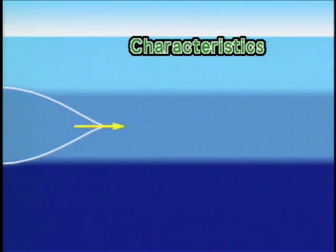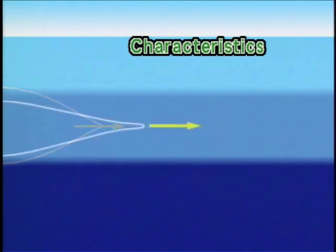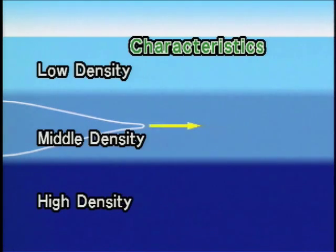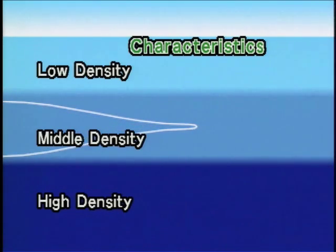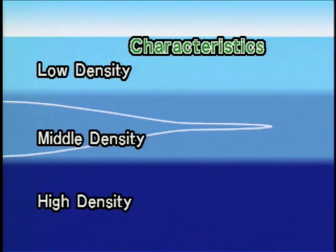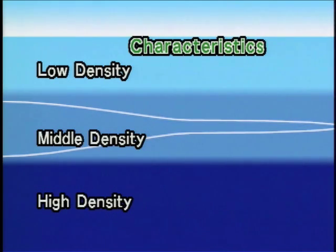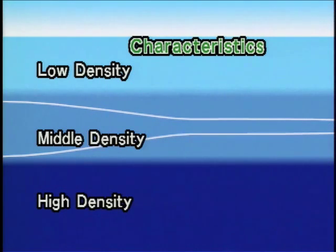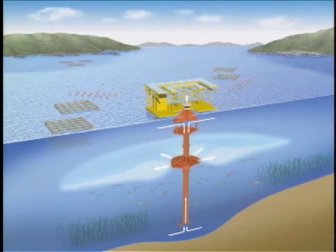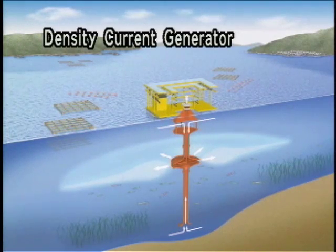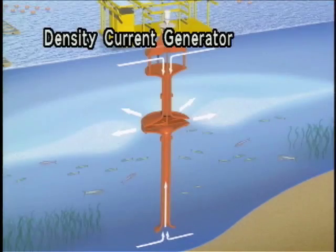Our generator creates a density current and effectively blends a wide variety of water density. Density current is a natural phenomenon — when a mass of water mixes with another mass, it tends to enter a layer of water with the same density. This density current, once created, keeps expanding without any outside help.